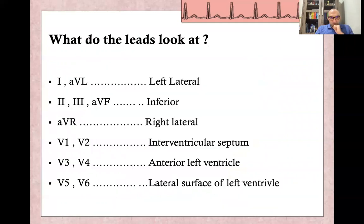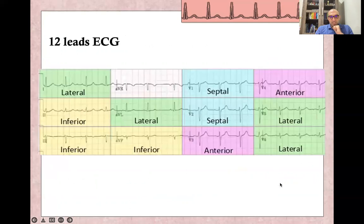To summarize the 12-lead ECG: lead 1 and AVL are left lateral leads. Leads 2, 3, and AVF are inferior leads. V1 and V2 view the interventricular septum. V3 and V4 view the anterior left ventricle. V5 and V6 view the lateral surface of the left ventricle. When arranged on the ECG paper, lead 1 and AVL are lateral leads alongside V5 and V6; leads 2, 3, and AVF are the inferior wall leads; V1 and V2 are the septal leads; and V3 and V4 are the anterior wall leads.